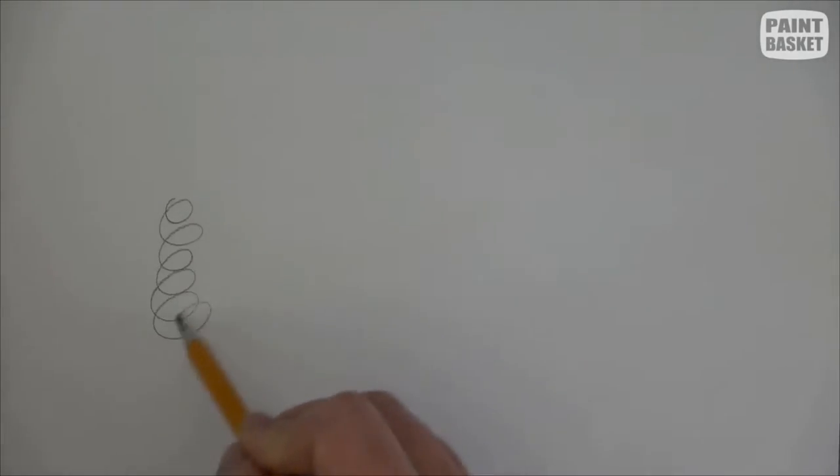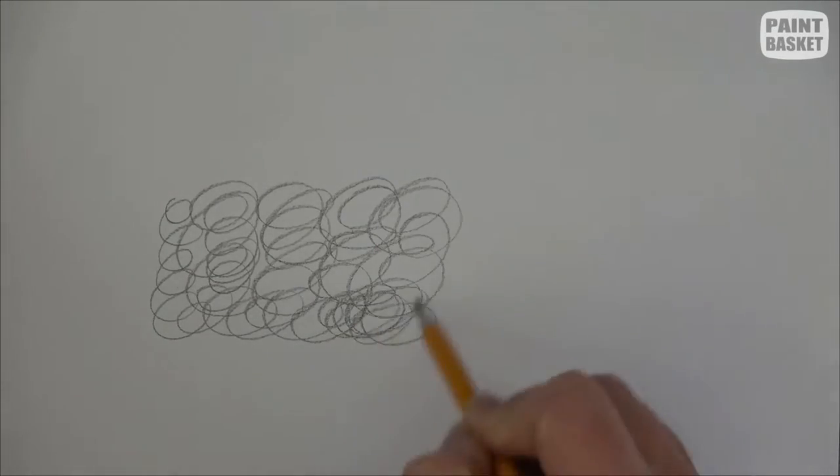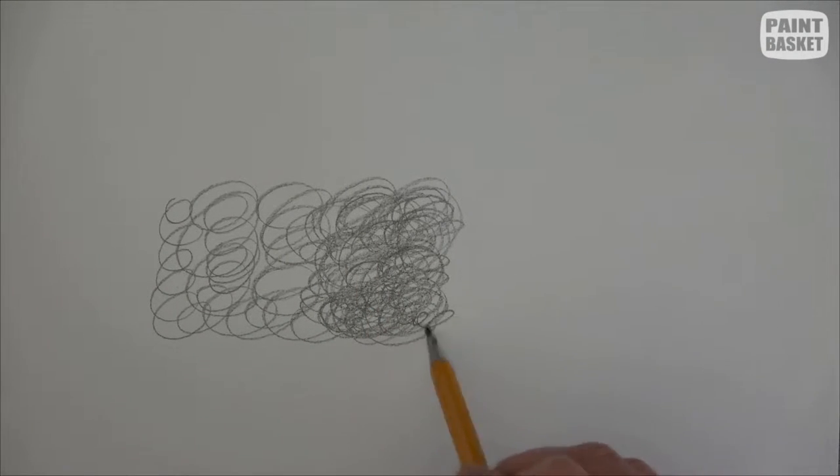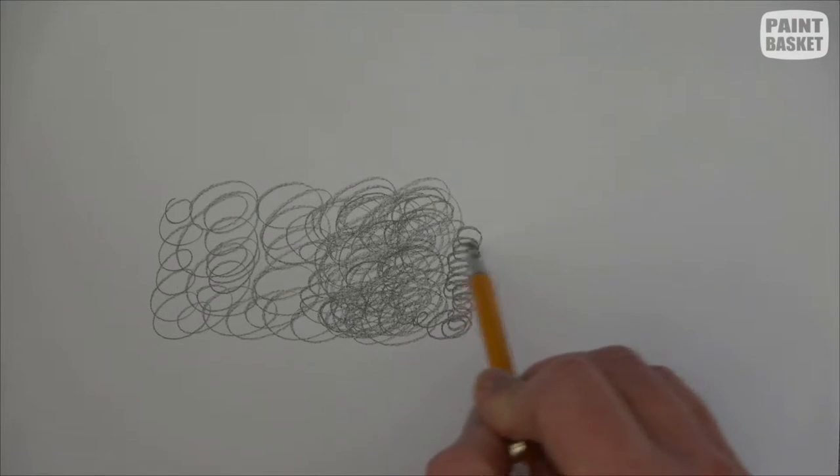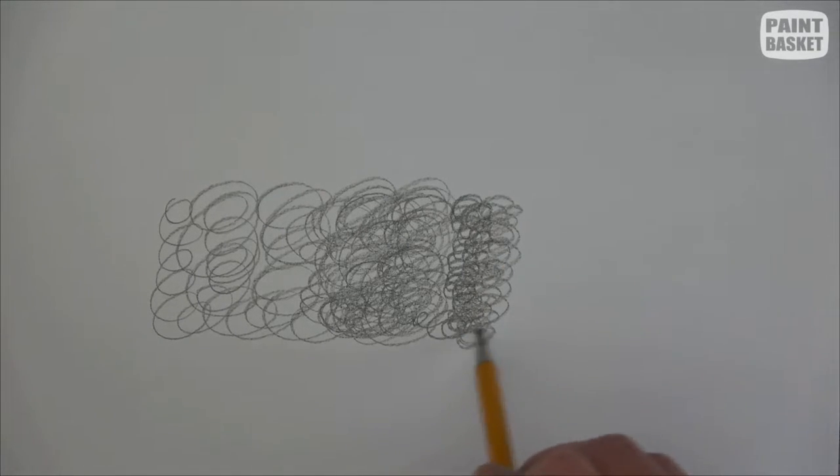There are three basic scumbling techniques. The first is to draw using continuous circles. The more you go over an area, the more you cover up the paper, the darker the area becomes. To further control the tonal value and texture you get, you can also vary the size of your circles. The smaller your circles, the darker the area will appear.